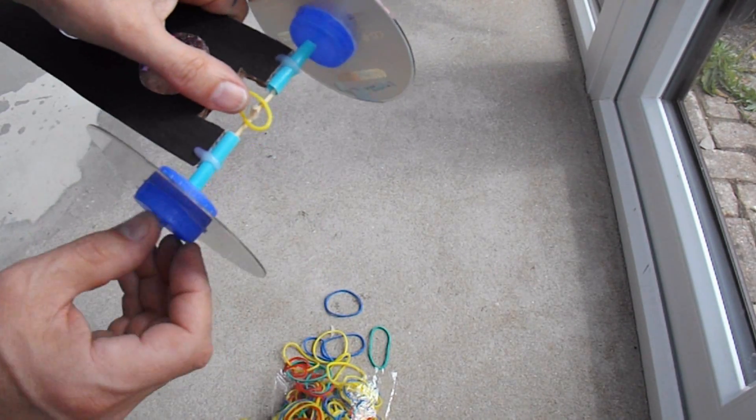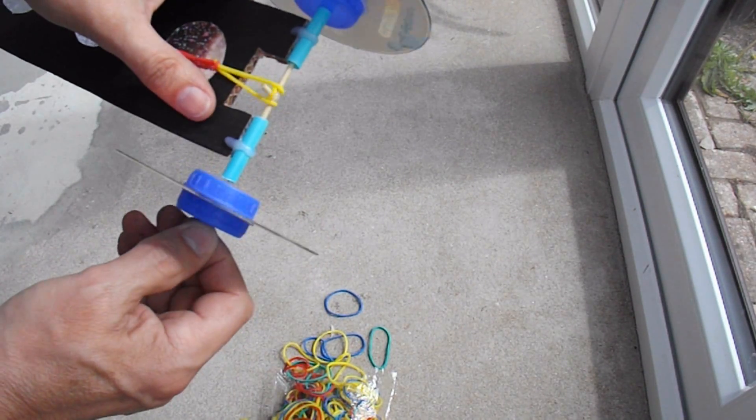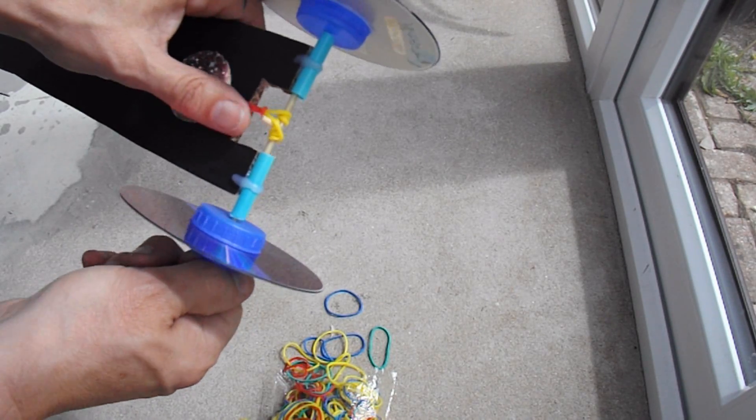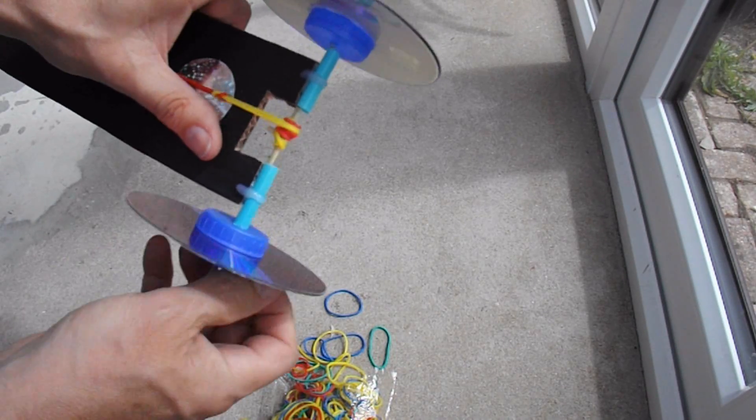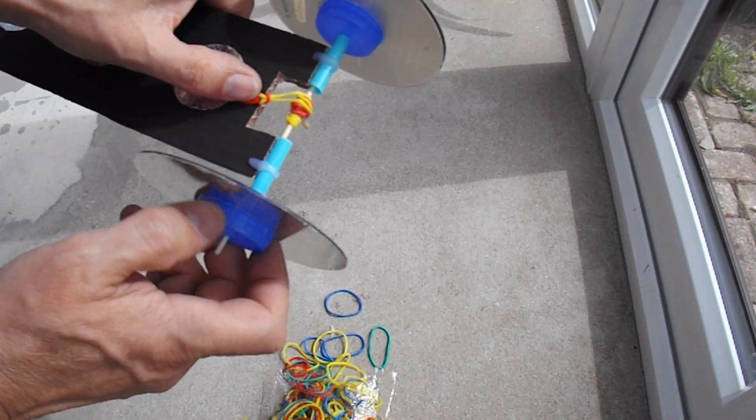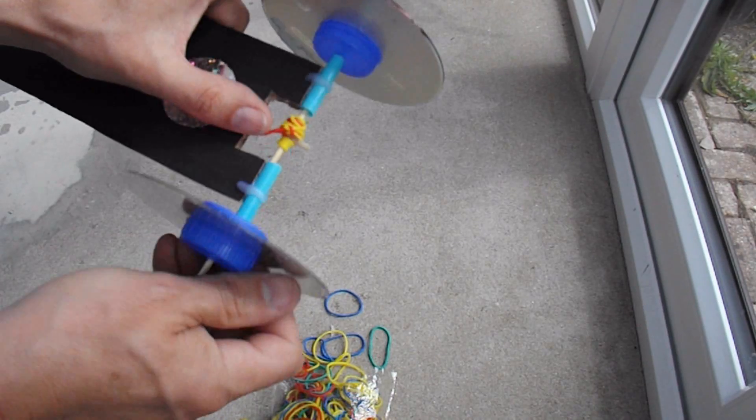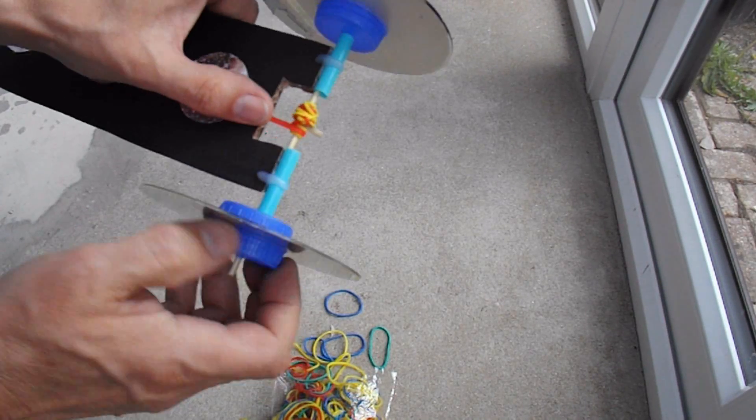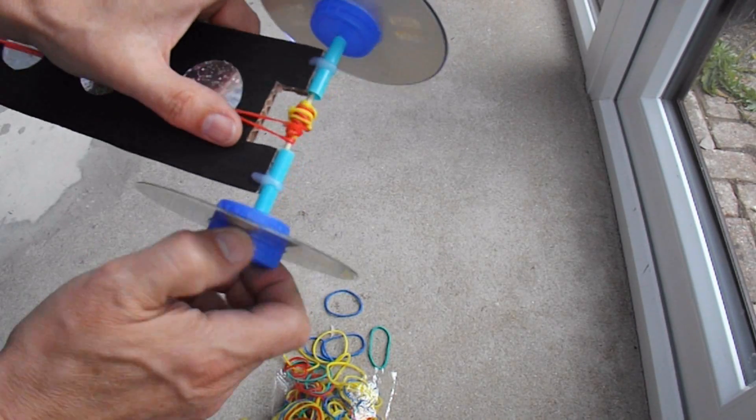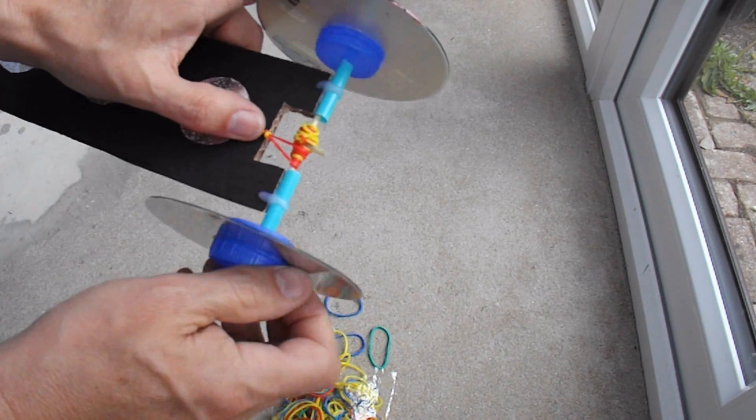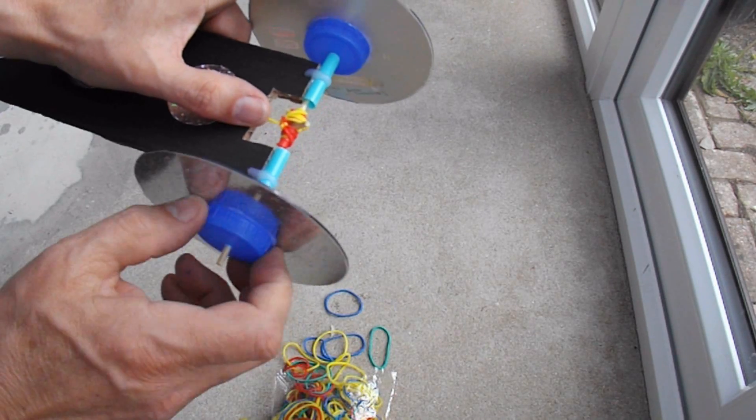So we just hook that on the back there. That holds it in place. Wind it up. Yeah, I think these are silicone bands rather than rubber bands. I don't think that's going to matter at all. They're still going to do what we need them to do. I can hear the washing machine going in the kitchen.